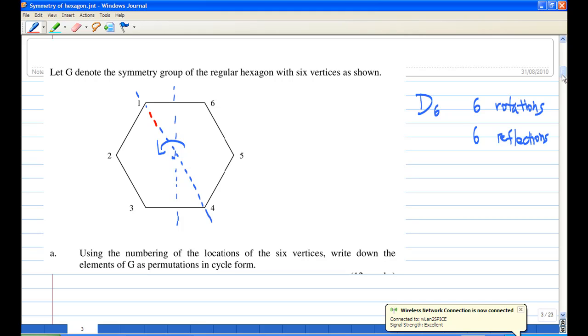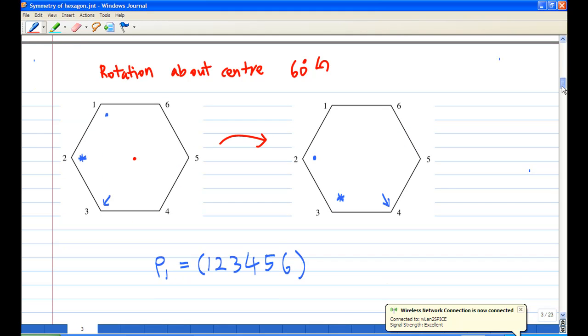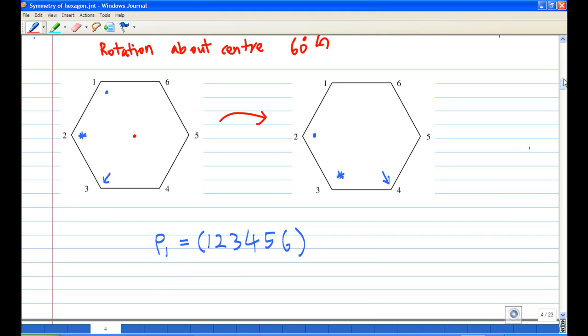Let's look in a little bit of detail at rotation: rotation about center 60 degrees anti-clockwise. I have put some markers on the hexagon: a dog, a star, and an arrow. Now after the rotation 60 degrees anti-clockwise, the dog at location 1 moves to location 2, the star at location 2 moves to location 3, the arrow at location 3 moves to location 4. So whatever object is on location 1 moves to location 2.